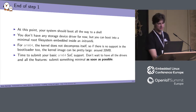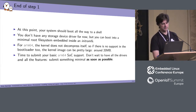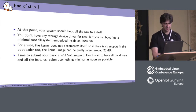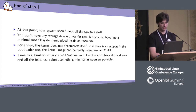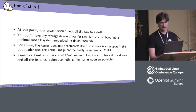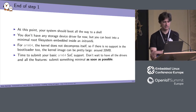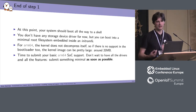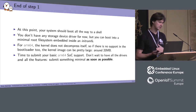At this point, at the end of step one, your system should boot all the way to a shell. It's possible that you don't have any storage device, but you can boot into a minimal root file system using InitramFS. Note that for ARM64, the kernel does not compress and decompress itself — so if there is no support in the bootloader, the image to load can be pretty large, around 20 megabytes for the kernel I use. At this point it's time to submit your basic ARM64 SoC support. Don't wait to have all the drivers and all the features — it's better to submit something minimal as soon as possible. Especially for the first submission, you will have some review and maybe some changes to do, so it's better to address those from the beginning.